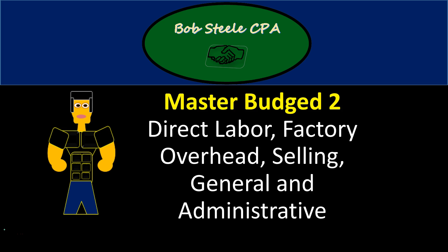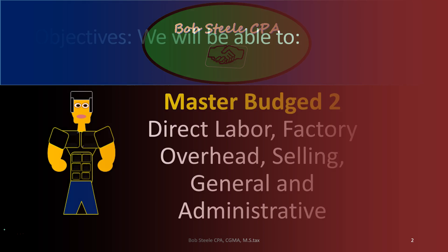Hello. In this lecture we're going to continue on with the master budget. We started the master budget last time, so if you haven't seen the first part of this you may want to look at that first and then move on to the second piece of it. The second piece here includes direct labor, factory overhead, selling, general and administrative parts of the master budget.